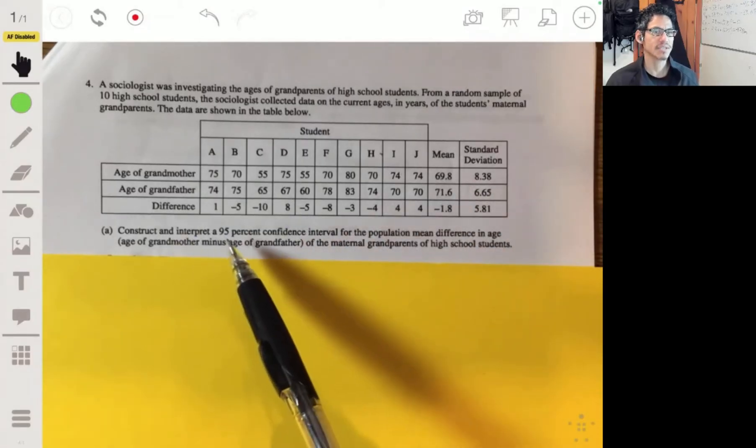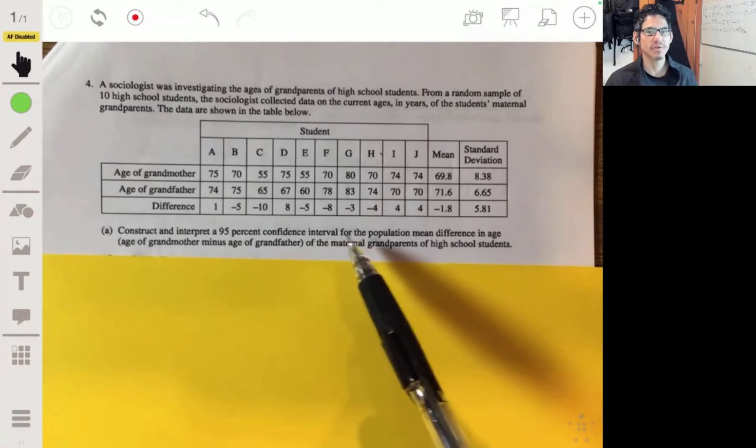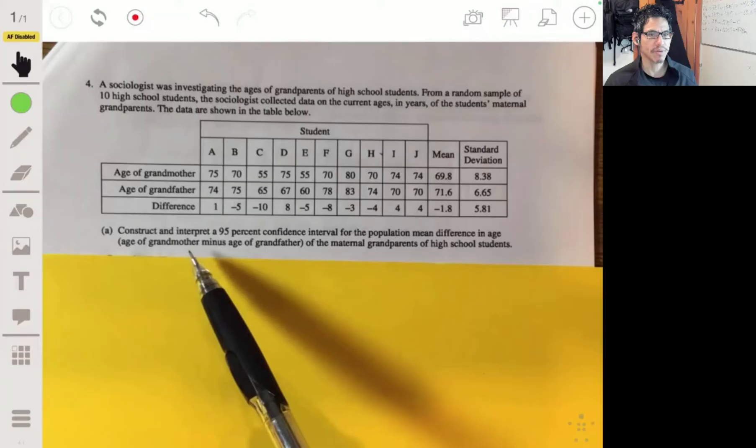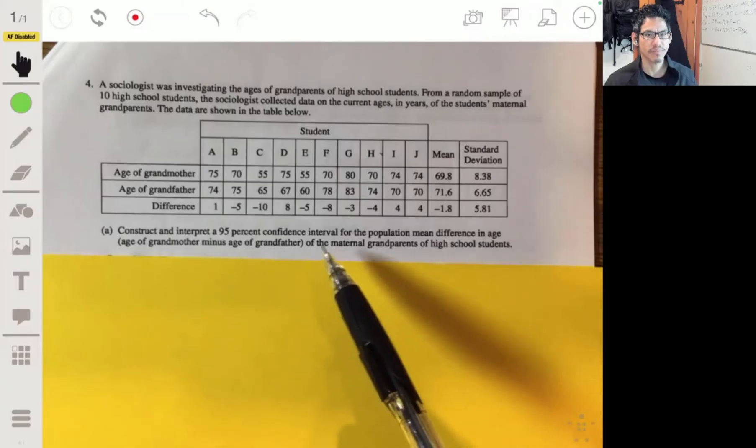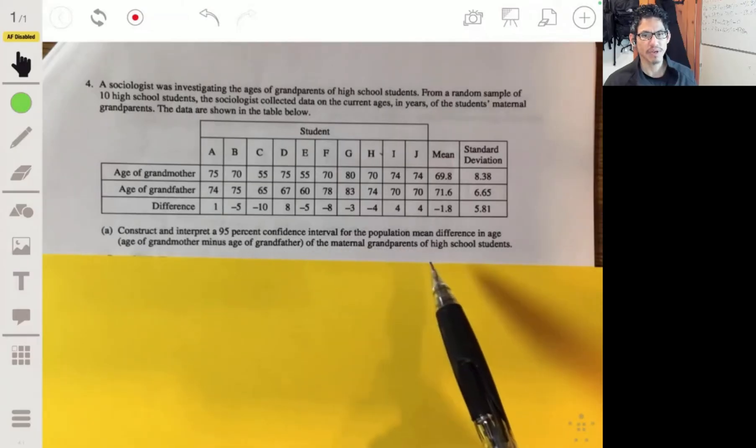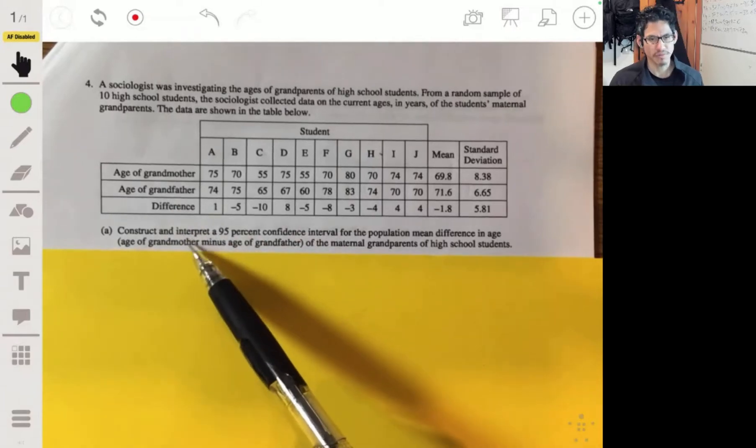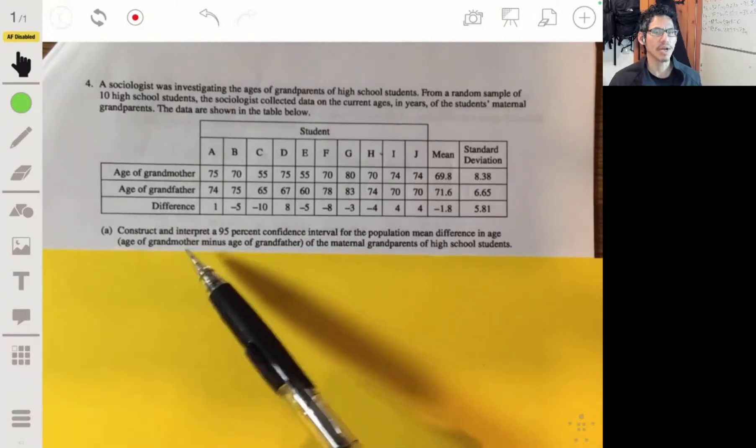Part A says to construct and interpret a 95% confidence interval for the population mean difference in age, where we take the age of the grandmother minus the age of the grandfather of the maternal grandparents of high school students. So essentially, we're trying to estimate with 95% confidence what the true mean difference is of the grandparents' ages, grandma minus grandpa.